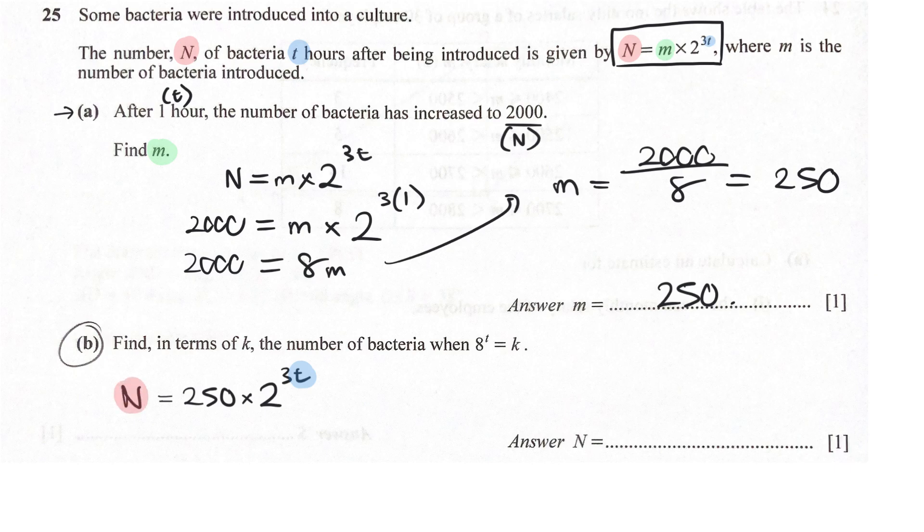So now to answer this part, in terms of K, find the number of bacteria, the N, when 8 power T equals K. So where in the world did this 8 power T come from?